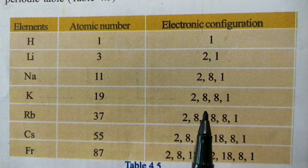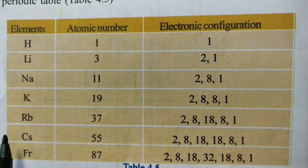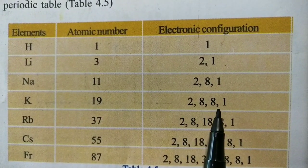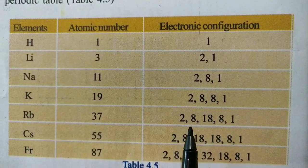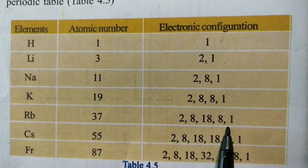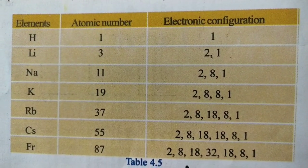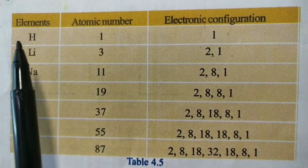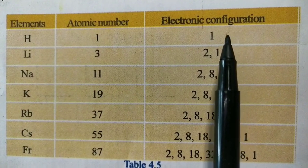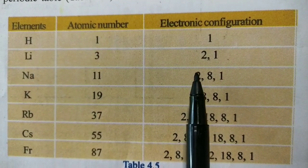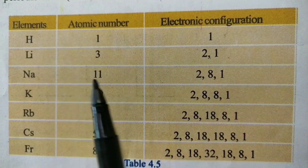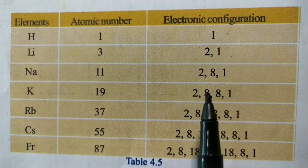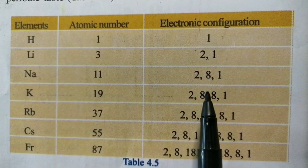4 shells, 5 shells, 6 shells. Hydrogen is not in a period. Lithium is in a period — 2 shells. Sodium is in a period — 3 shells. Period number is equal to number of shells.